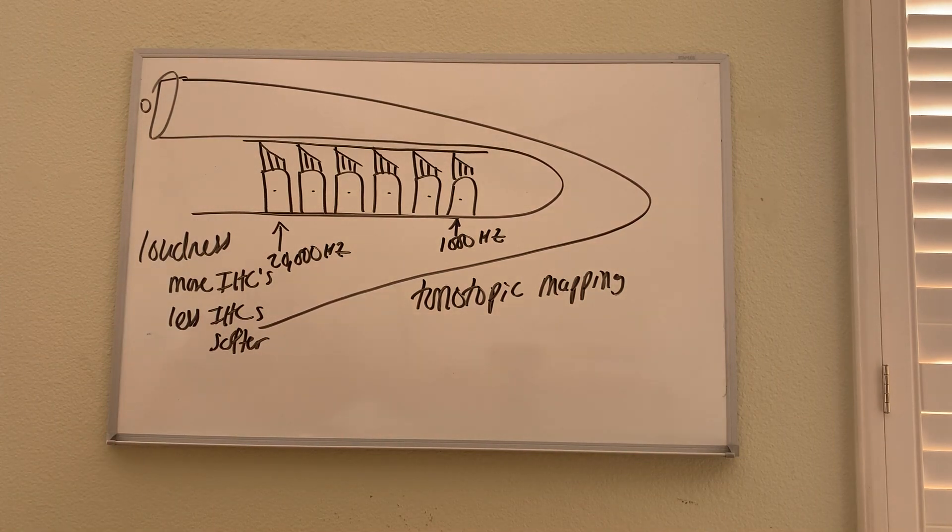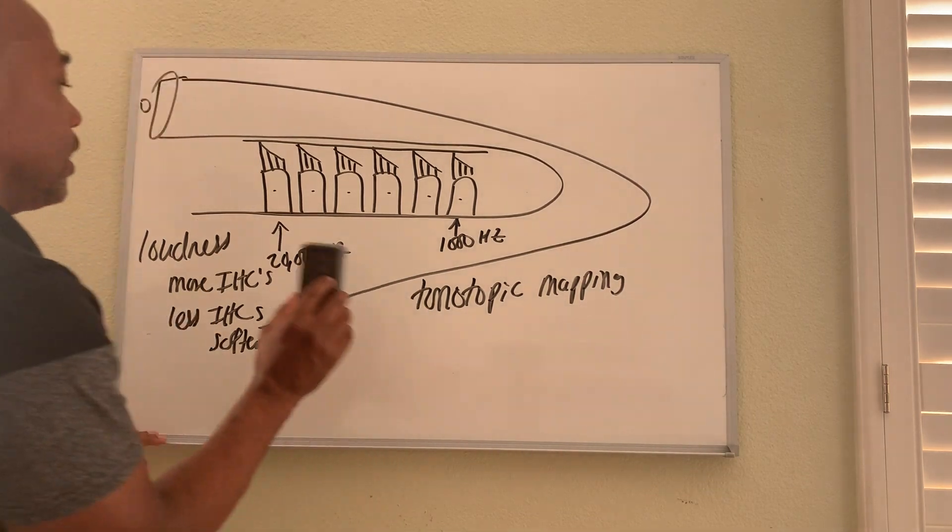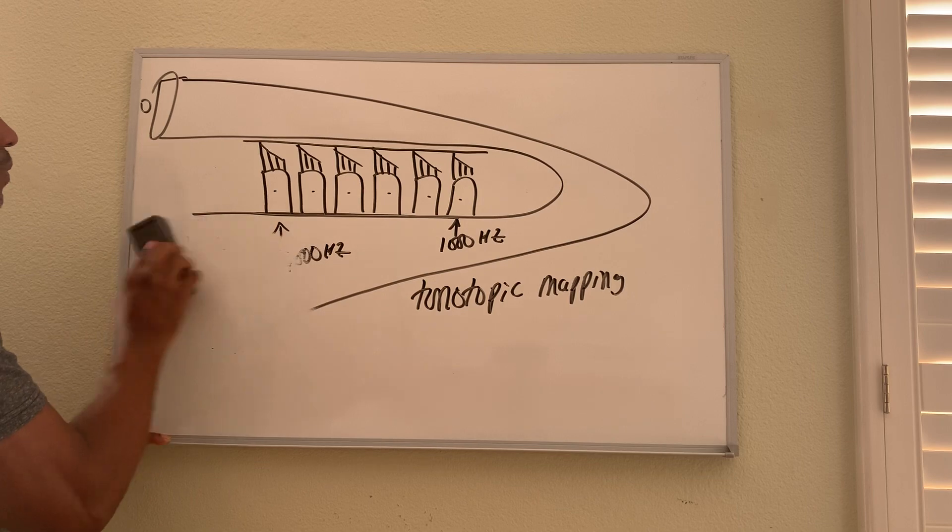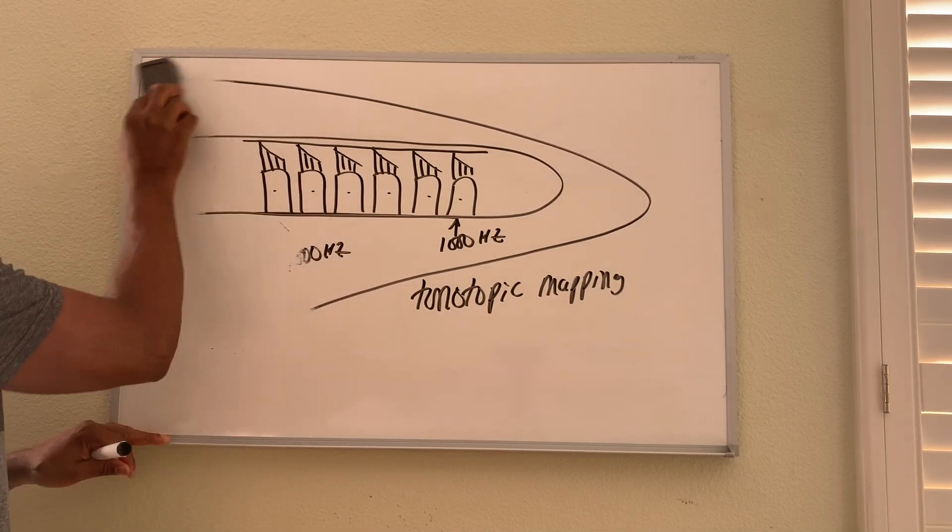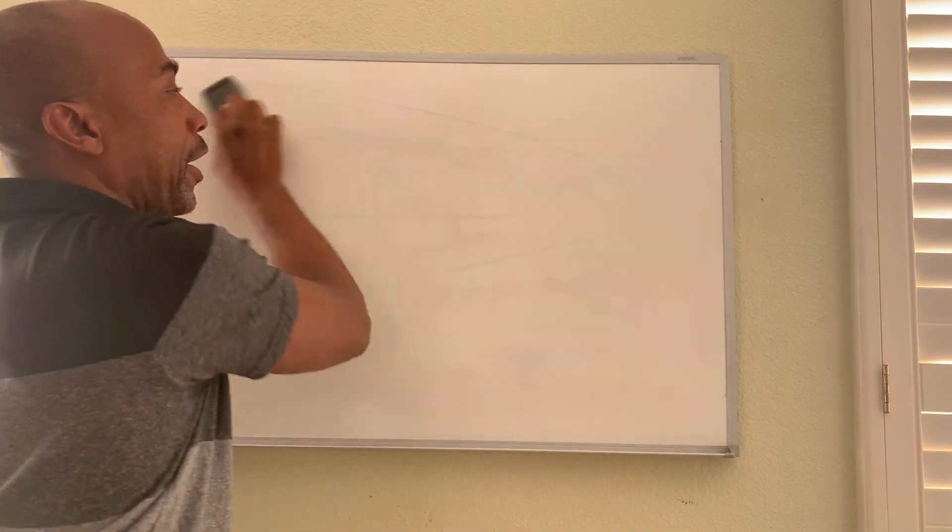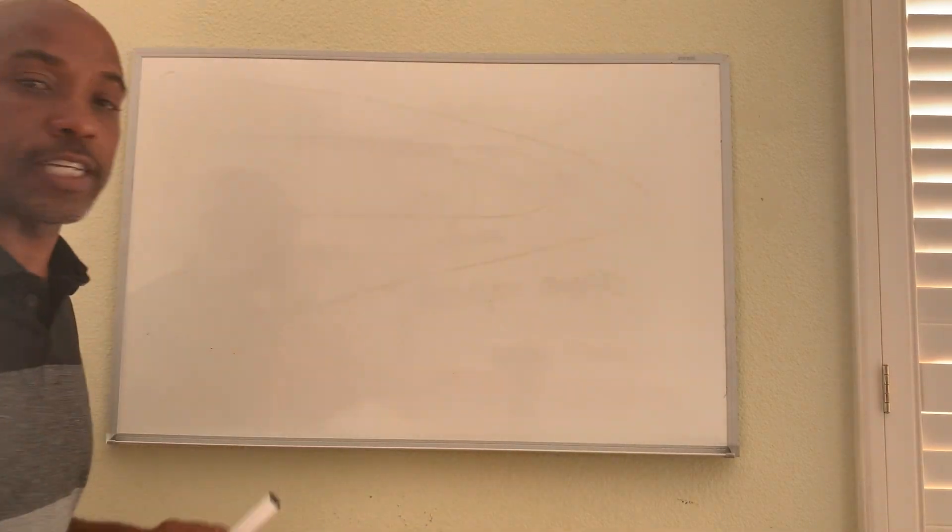Now we can also look at what's called cochlear tuning. So now we're going to look at what roles the outer hair cells play. So far we've only been talking about the inner hair cells. So the outer hair cells run right next to the inner hair cells.